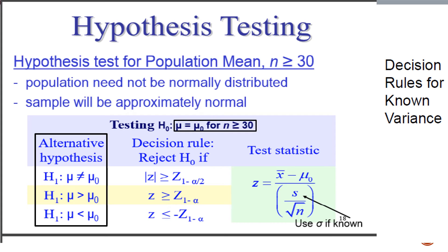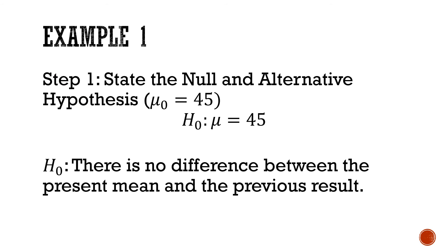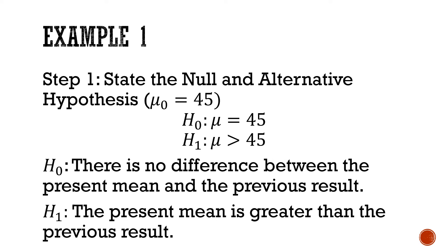Since we are asked if the present examinees are better than the previous results, the alternative hypothesis is mu is greater than 45, while the null hypothesis is mu equals 45. In words: the null hypothesis states there is no difference between the present mean and the previous result, while the alternative hypothesis states the present mean is greater than the previous result.